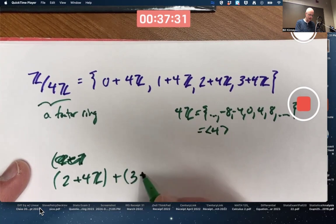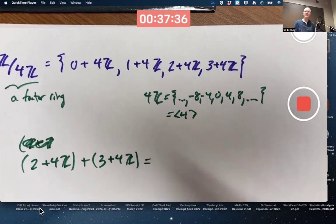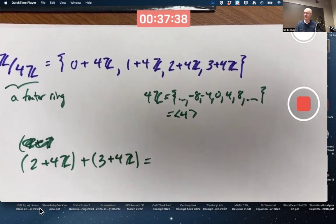We will also multiply them. This first step is the definition of coset addition as a group operation from Chapter 9.